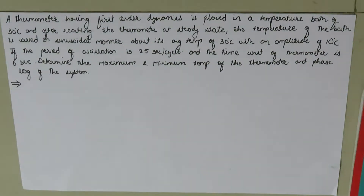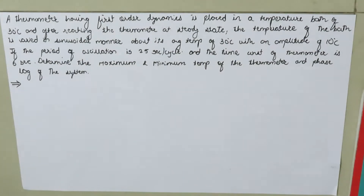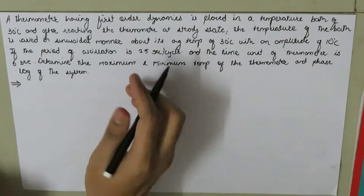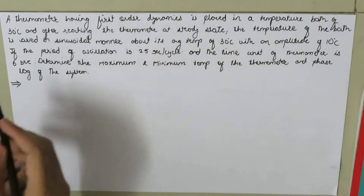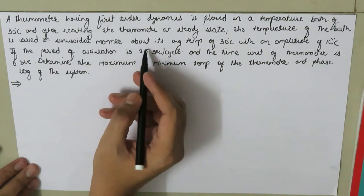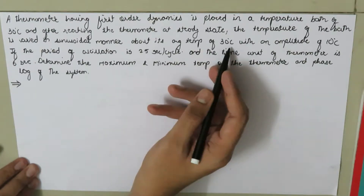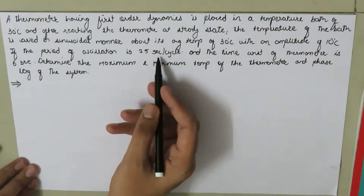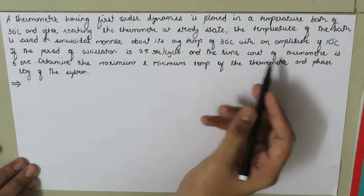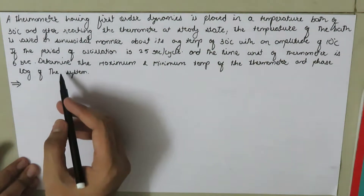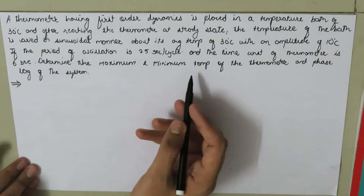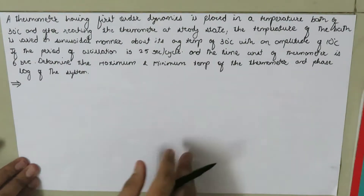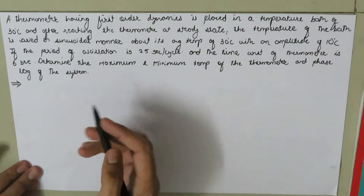Today we are going to solve a problem based on the sinusoidal response equation. A thermometer having first-order dynamics is placed in a temperature bath of 30 degrees Celsius. After reaching steady state, the temperature of the bath varies in a sinusoidal manner with a mean of 30 degrees Celsius, an amplitude of 10 degrees Celsius, a period of oscillation of 25 seconds per cycle, and a time constant of 56 seconds. We are asked to determine the maximum and minimum temperature of the thermometer and the phase lag of the system.